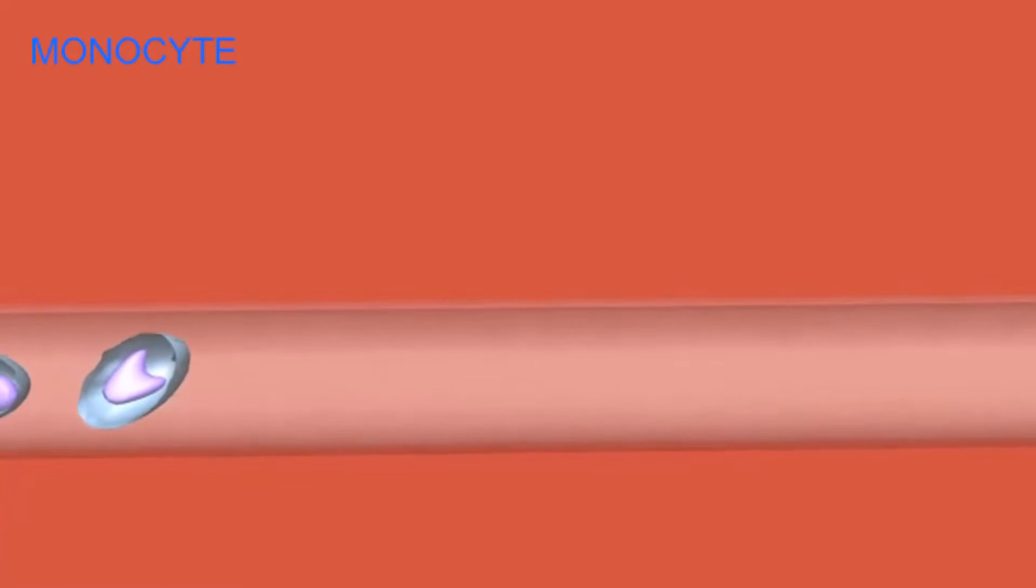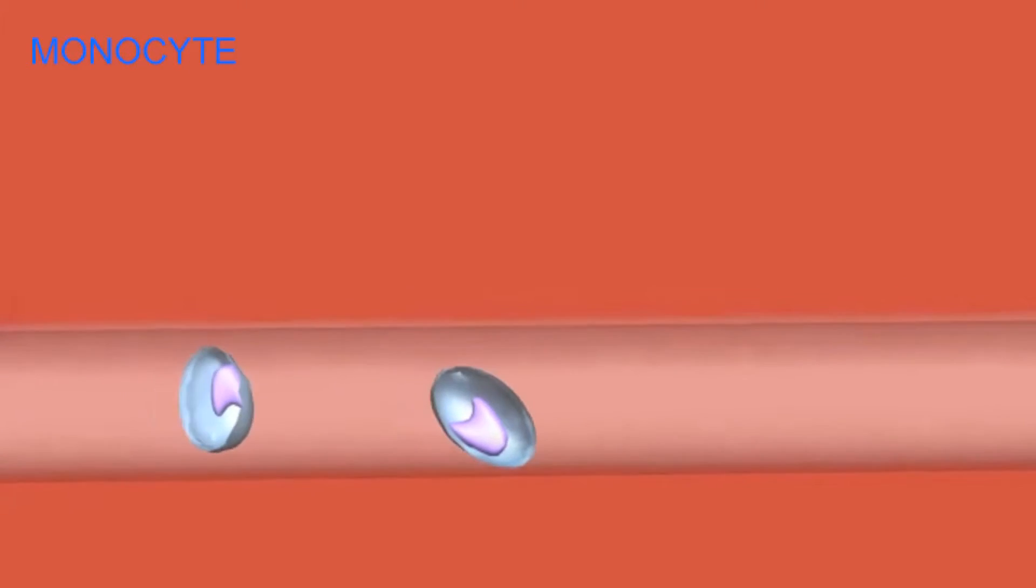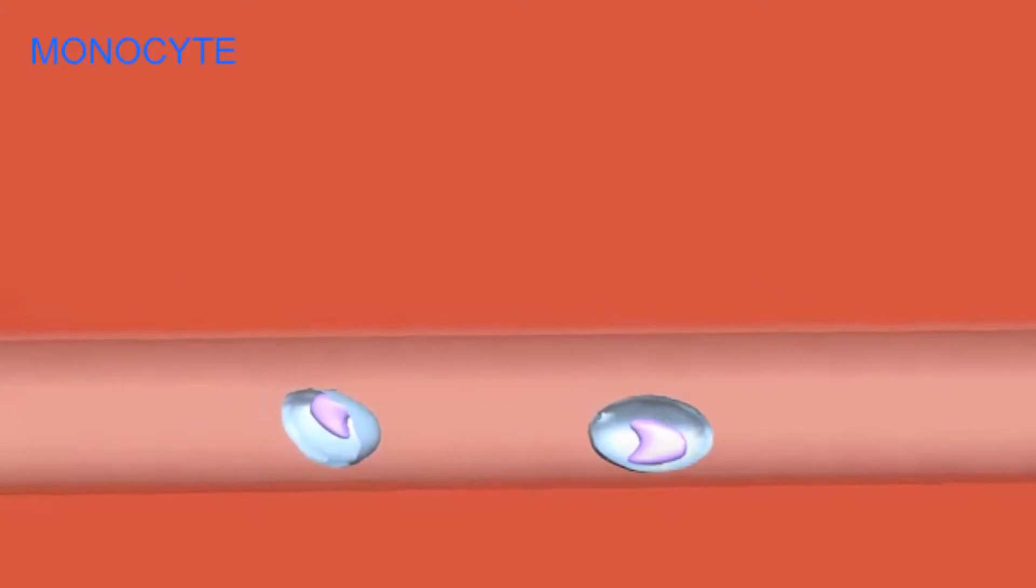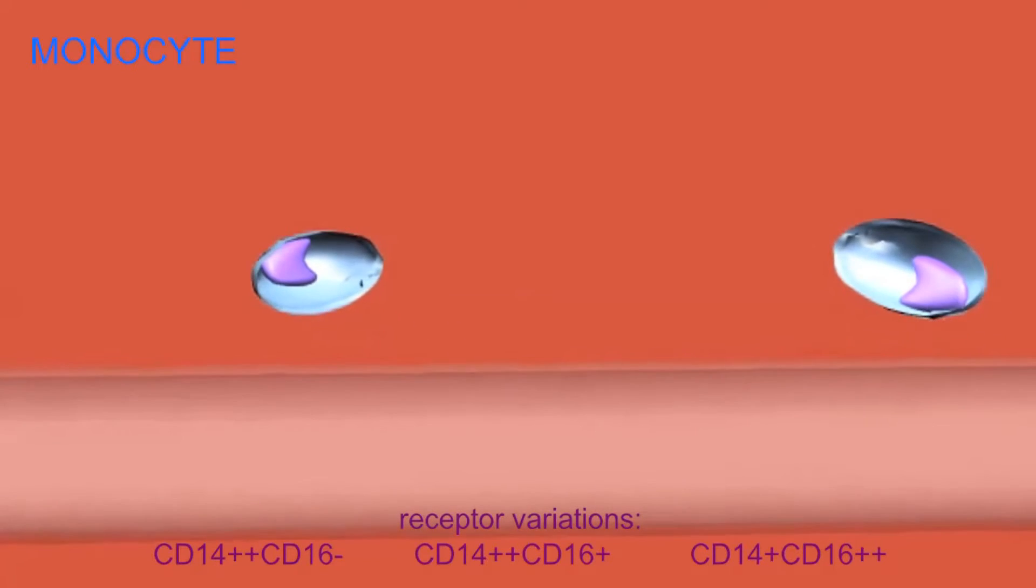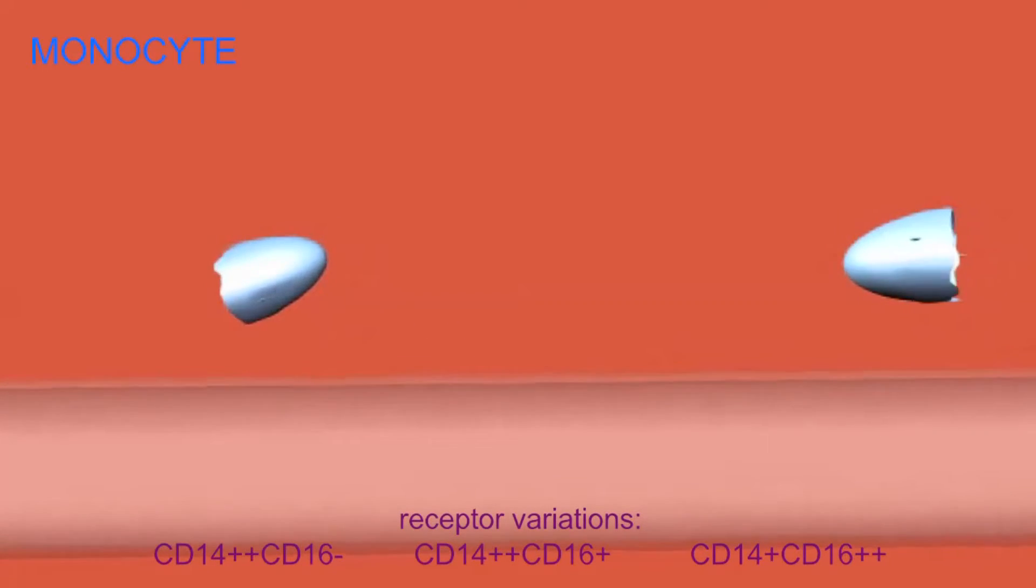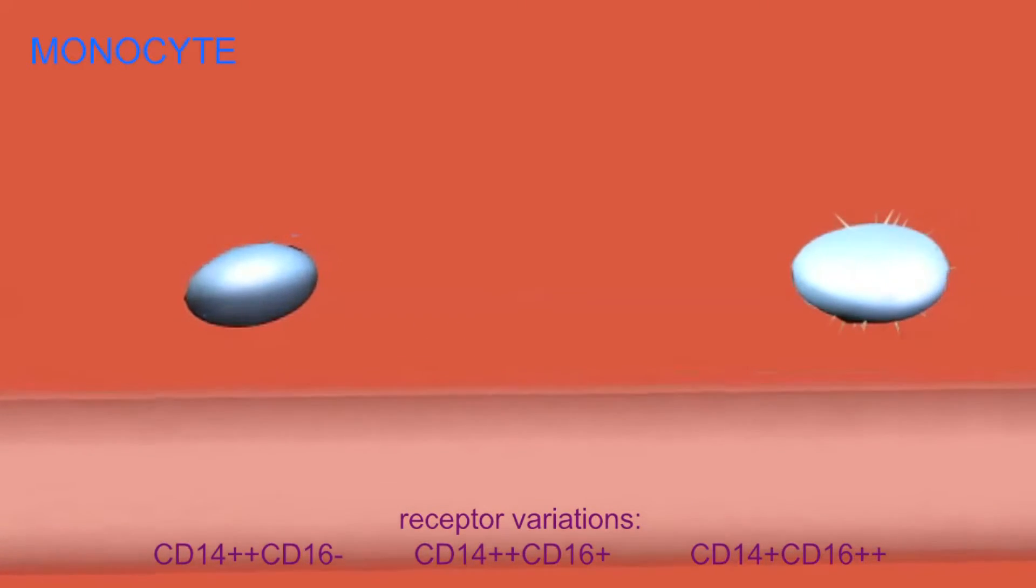This situation is a bit more complex, however. There are different types of monocytes which express different types of cell membrane receptors and differ in their abilities to differentiate into dendritic cells or into dendritic cells and macrophages.